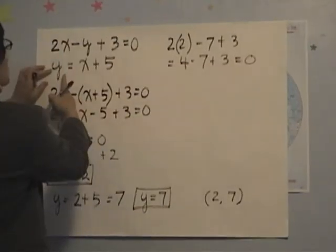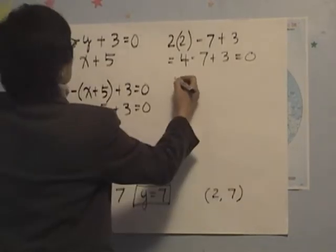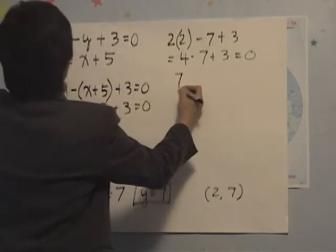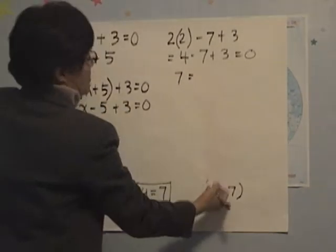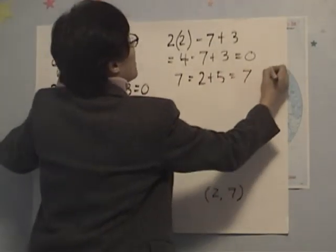Second equation, y equals x plus 5, y is 7, equals x is 2, 2 plus 5, equals to 7, yes.